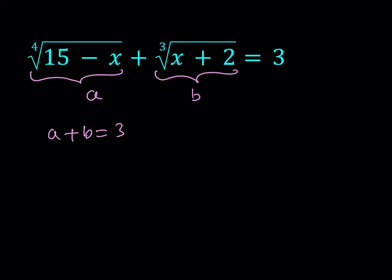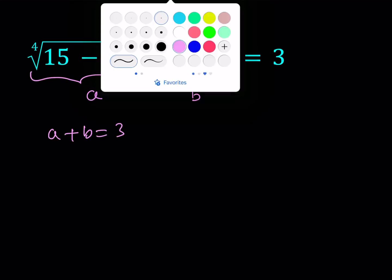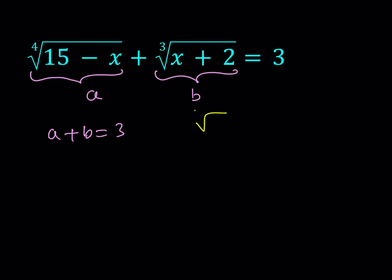Now how do we get another equation? Well let's go ahead and look at what we did. We said the cube root of x plus 2 is equal to b and the 4th root of 15 minus x is equal to a. So I can write this as the 4th root of 15 minus x equals a. Let's raise both sides to the 4th power. 15 minus x equals a to the 4th. And then let's go ahead and do the same thing for the cube root. Cube root of x plus 2 is equal to b. If you cube both sides you get x plus 2 is equal to b cubed.